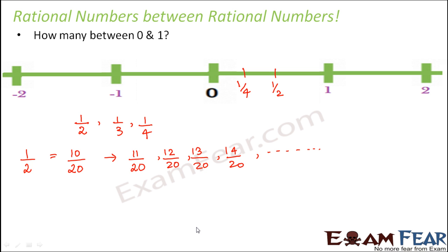So what happens to these numbers, where are they located? So from 10 by 20 to say 20 by 20, because by the time you reach 18 by 20, then you will have 19 by 20, then you have 20 by 20. So 20 by 20 is actually 1. So these numbers they all lie between 1 by 2 and 1. That means in this portion you have all these numbers: 11 by 20, 12 by 20, 13 by 20, 14 by 20. So how many do you have here? So we already got some 9 rational numbers here.